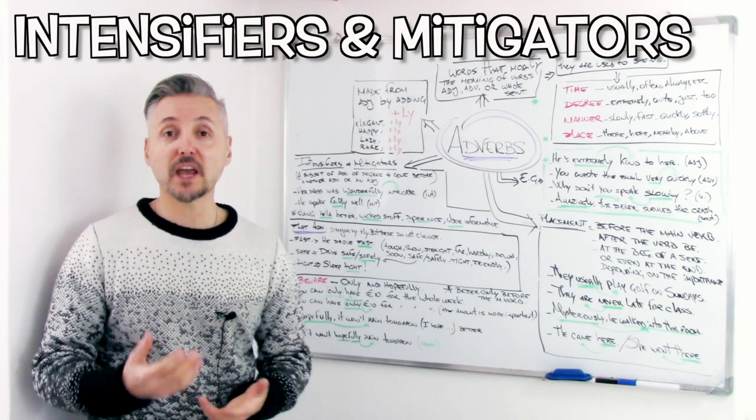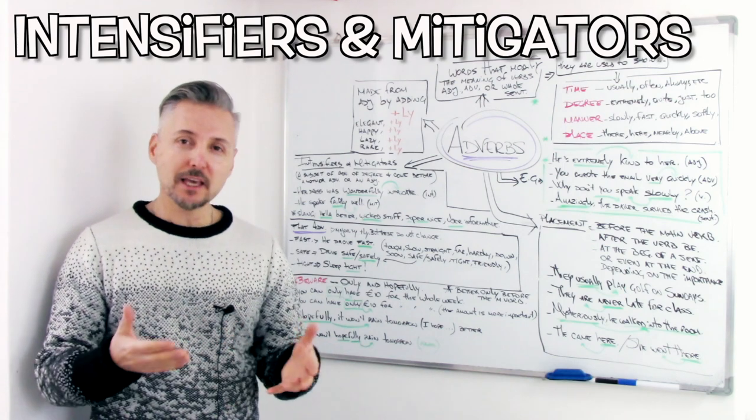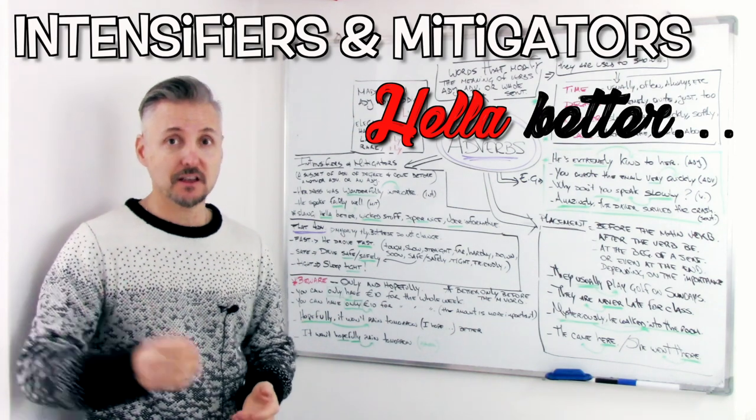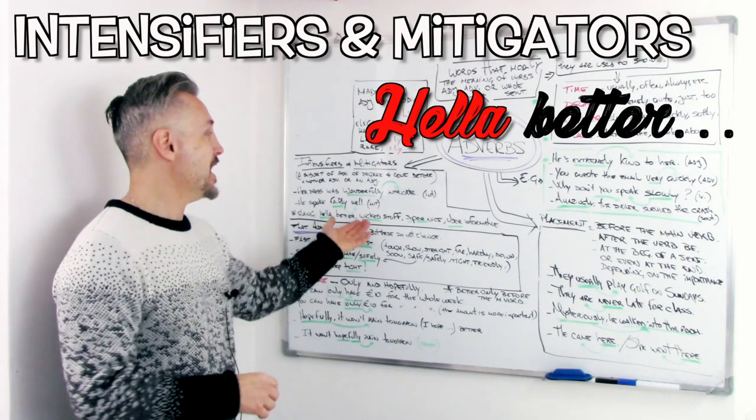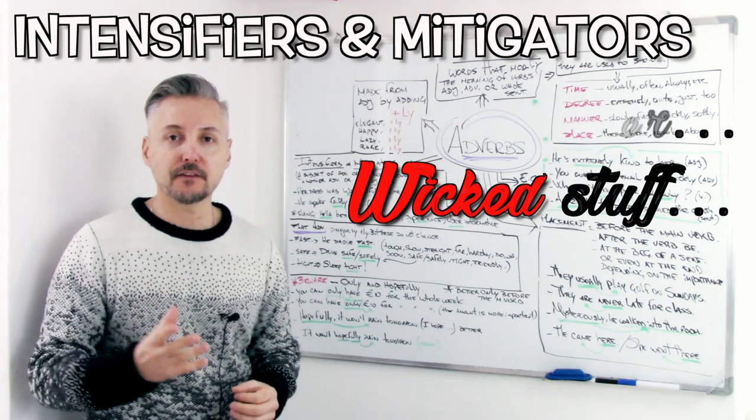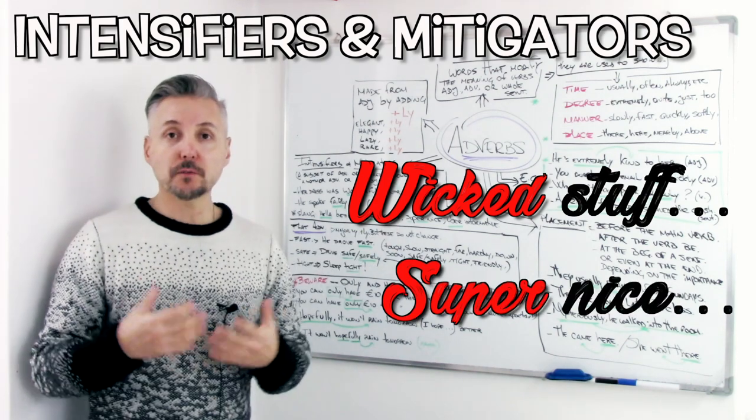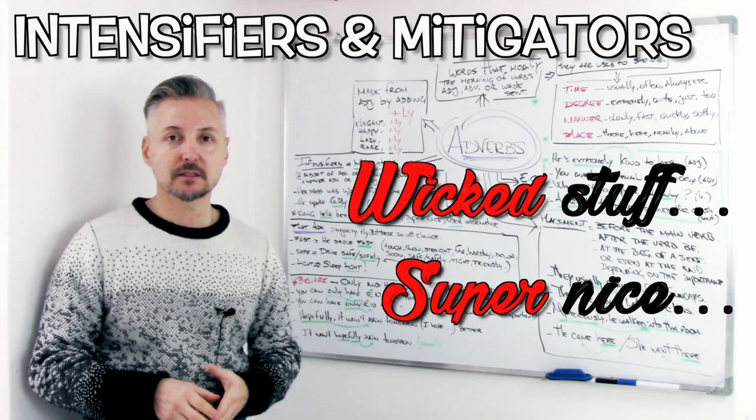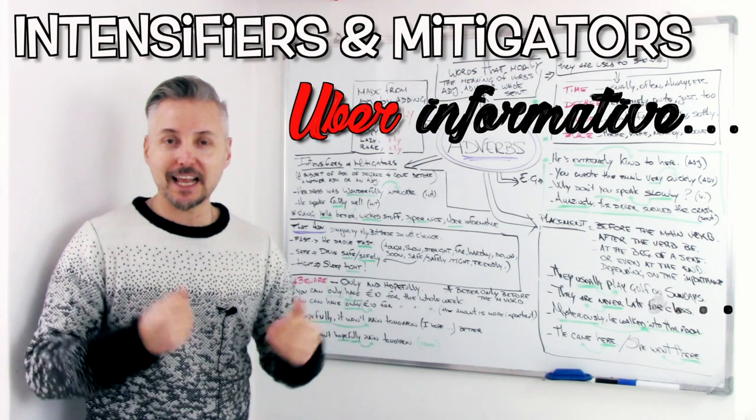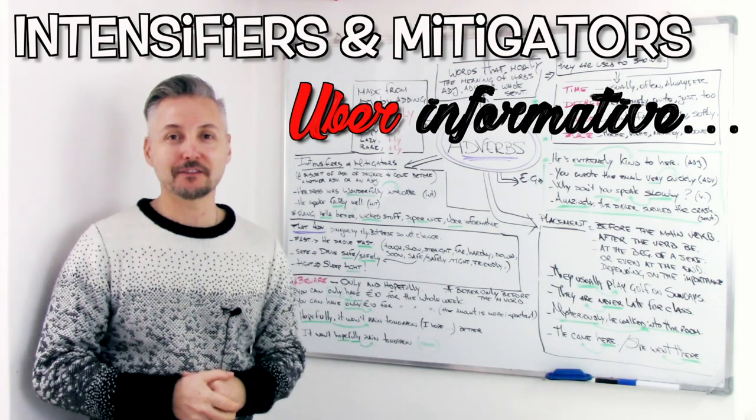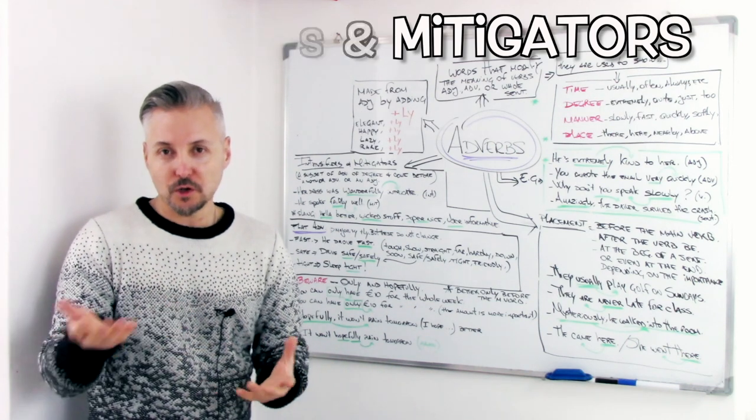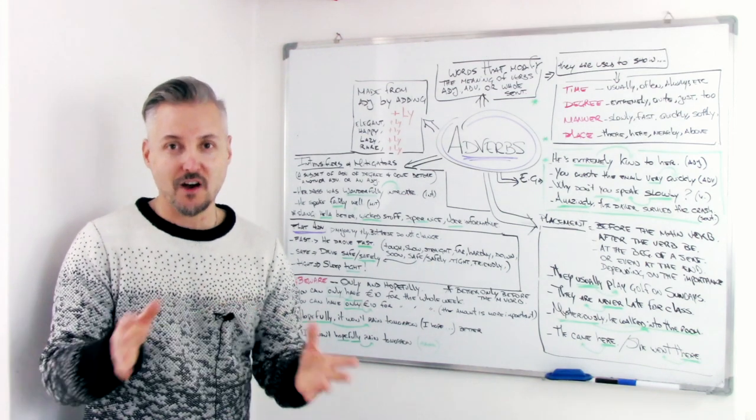There is a trend in this period to create intensifiers in slang. We can hear hella better. It's hella better than other things. For example, hella better. We have wicked stuff. I love wicked stuff. Wicked. Or, super nice. He is super nice to us. He is super nice to us. Uber informative. This lesson was uber informative. These are all slang intensifiers. But, if you wish to use them, you can. Nobody is going to say you're wrong.